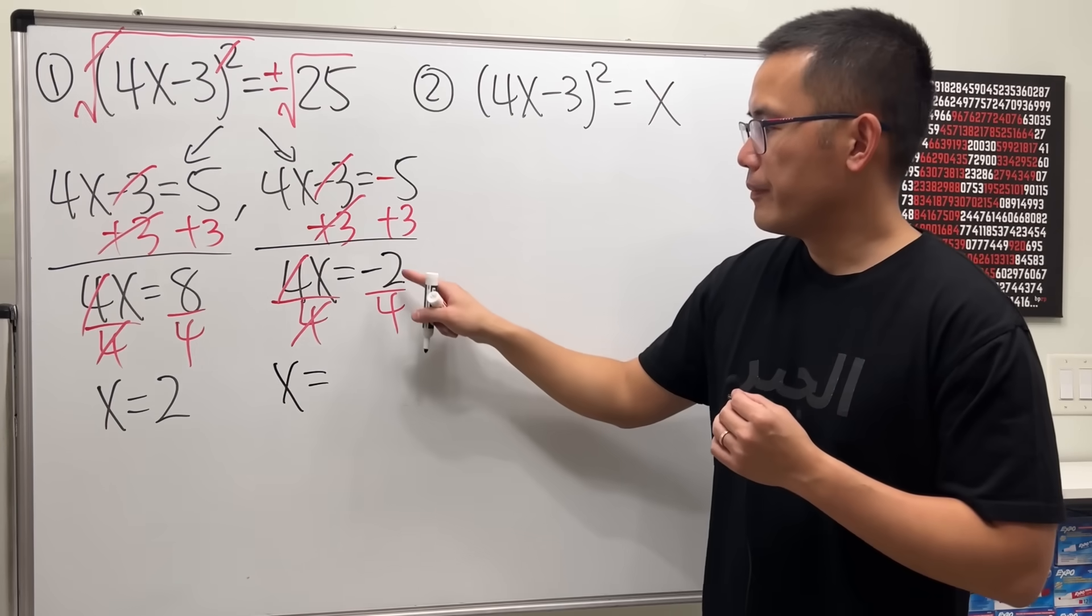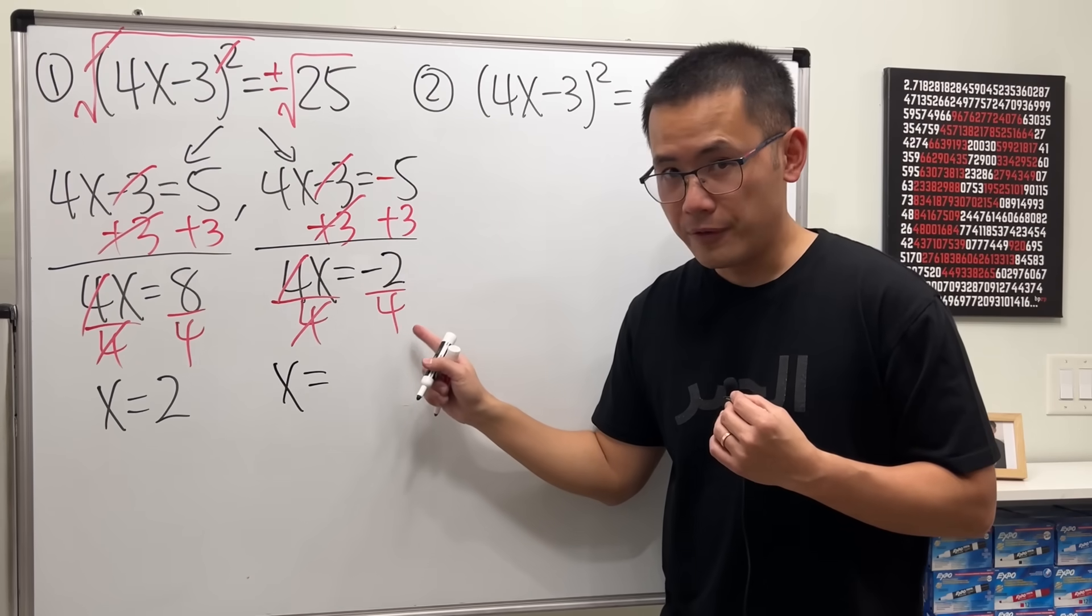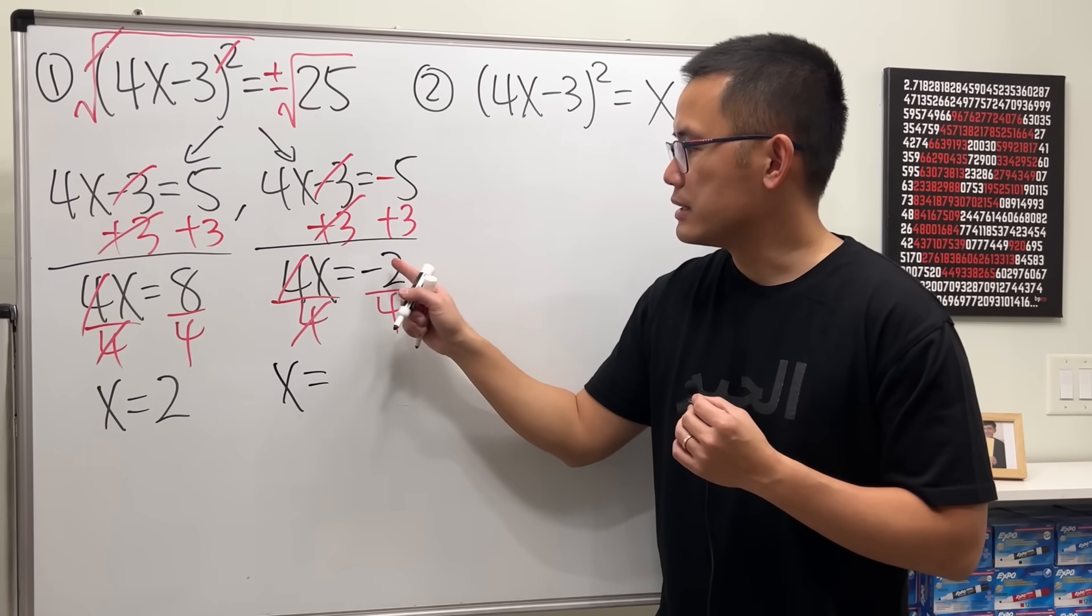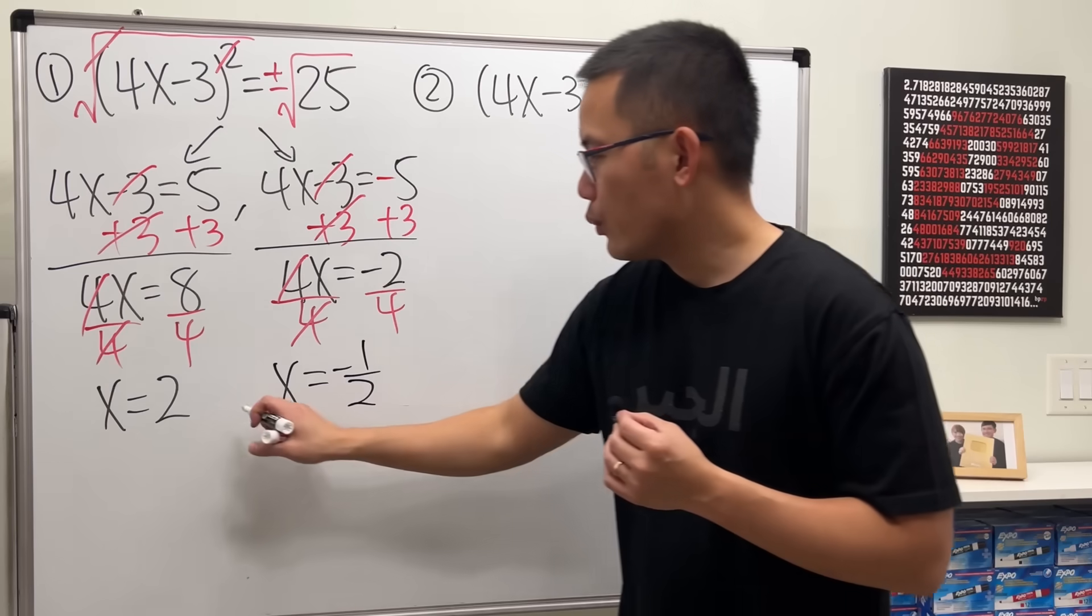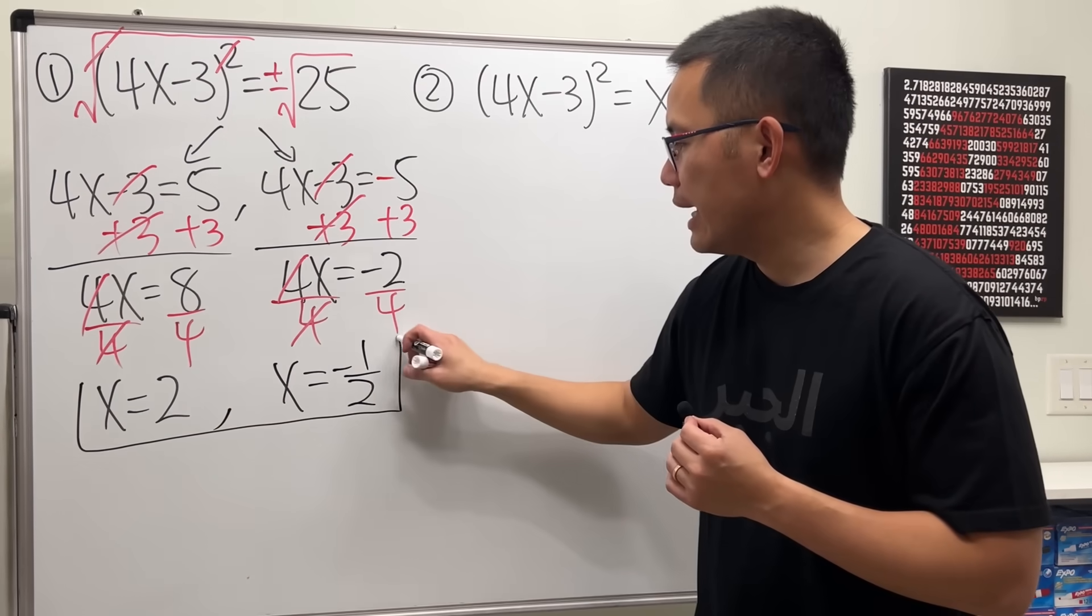And then divide both sides by 4. x equals, we have negative 2 over 4. Reduce this by 2, right? So it's negative 1 half. And then we have it. We have these two answers: 2 and negative 1 half.